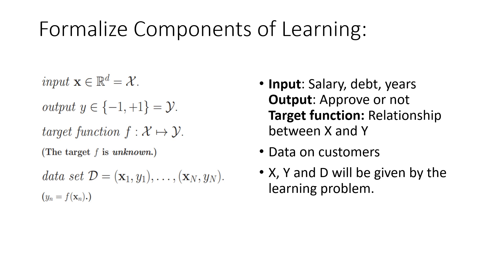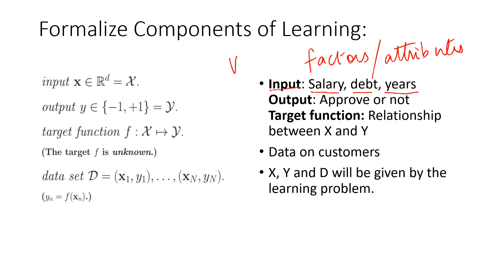So how do we formalize it? Some of the key players of the credit card example are the input — I know the salary of a certain customer, I know the debt, the years, maybe what outstanding balances they have. So I can have the input in terms of the factors or attributes. I call this an input because this is what I have, and I'm going to derive the relationship between this vector of attributes with the outcome. The way we denote that mathematically is by x, where every element of x is within a d-dimensional space and d is the number of factors. So this is a d-dimensional vector space — that is my input, denoted by x.